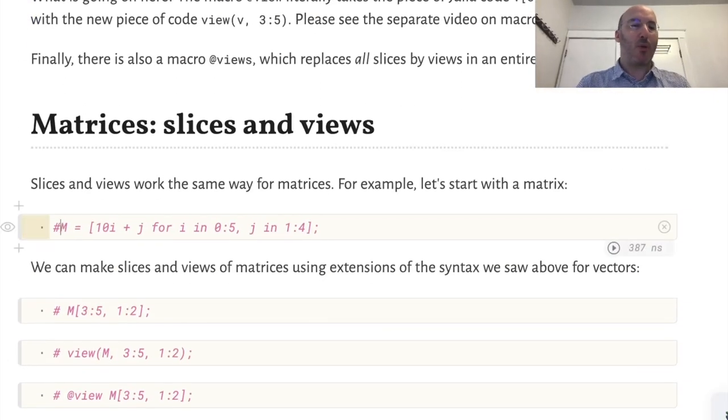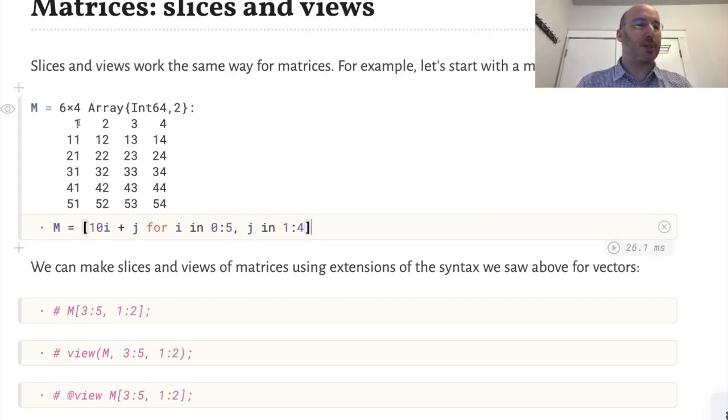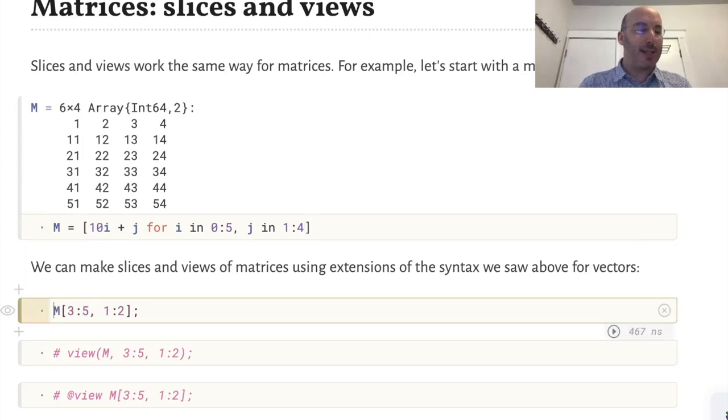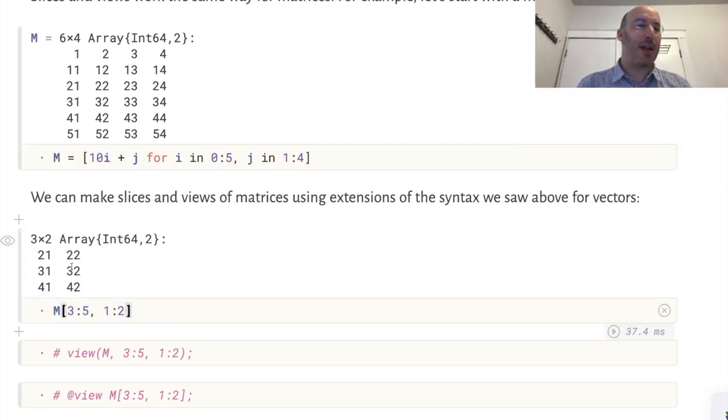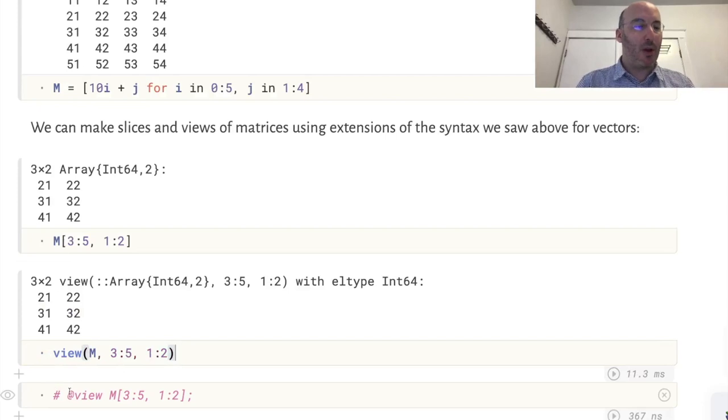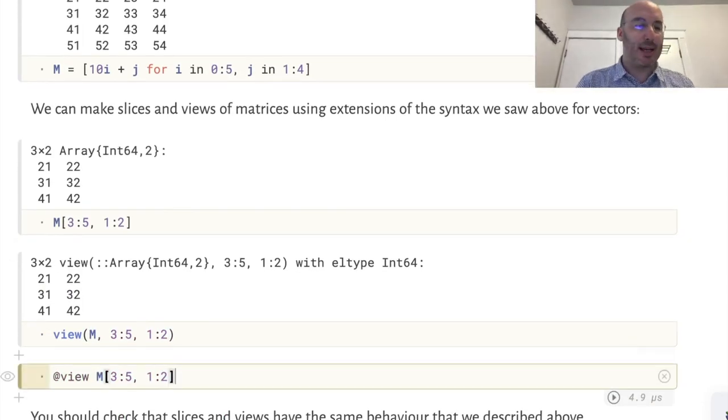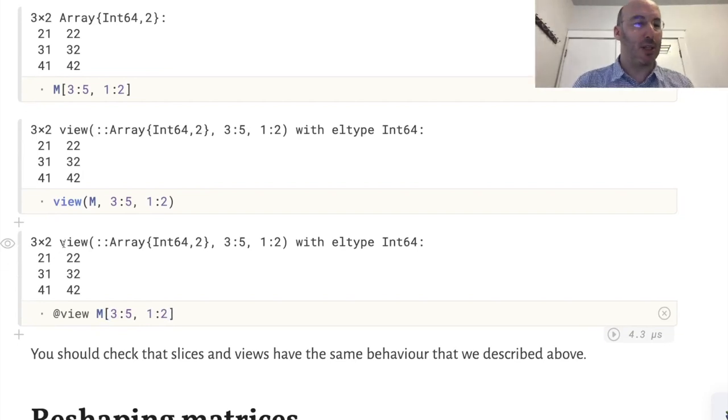The same thing works for matrices. Let's make a small matrix here, a 6 by 4 matrix. We can make slices just like before, except now we need to give a range of rows and a range of columns. But again, because it's a slice, this will be a copy. Similarly, we can make a view and use the @view macro to make a view instead.